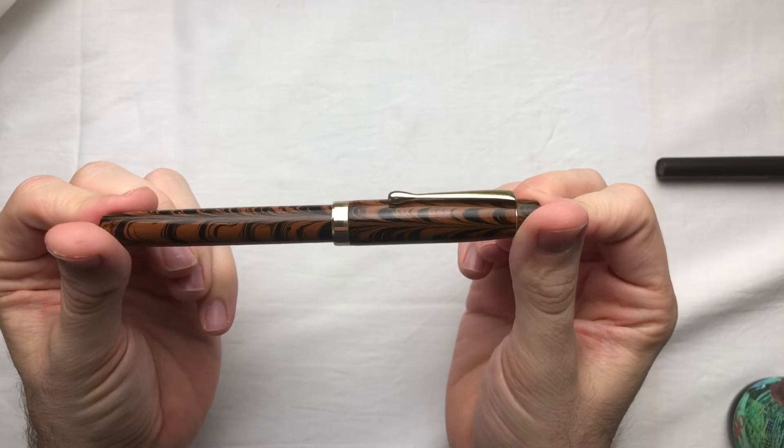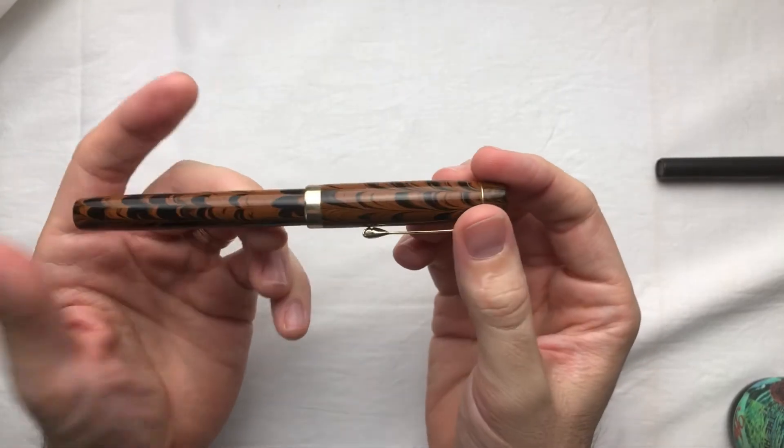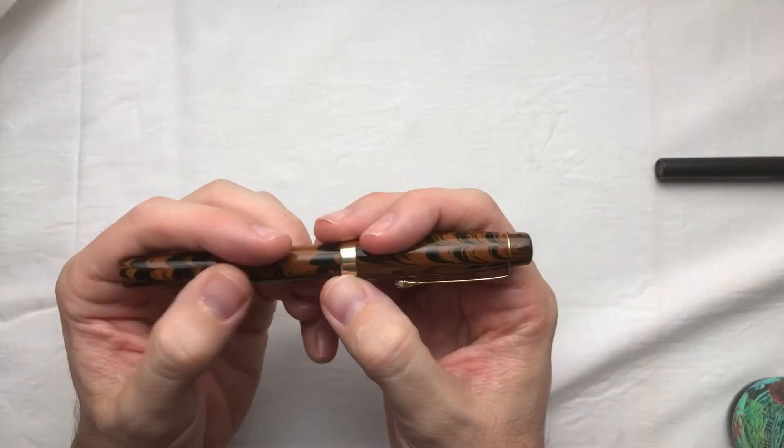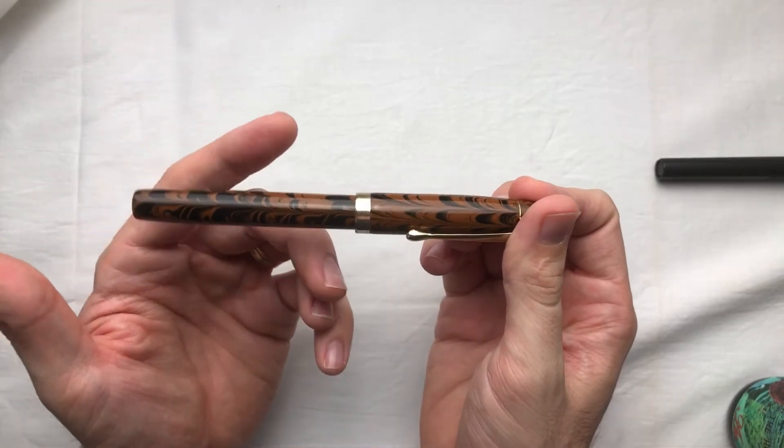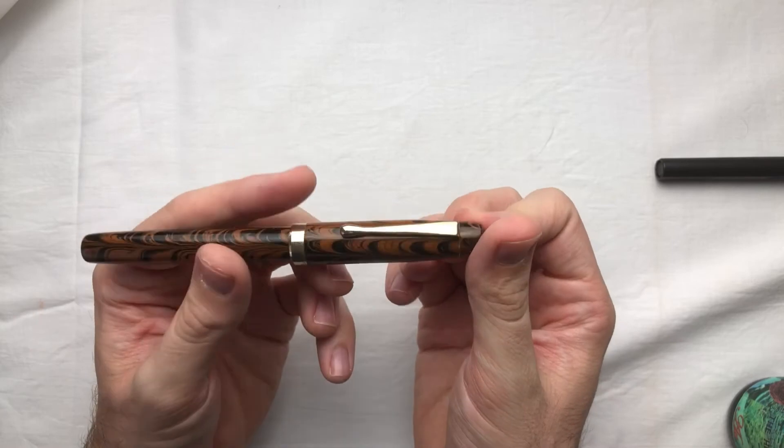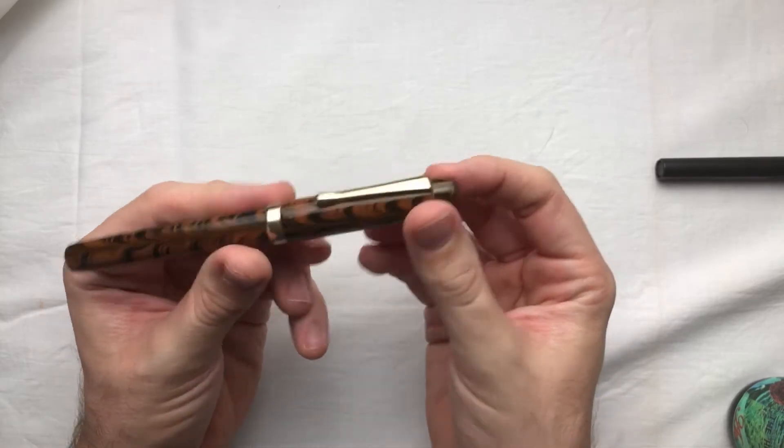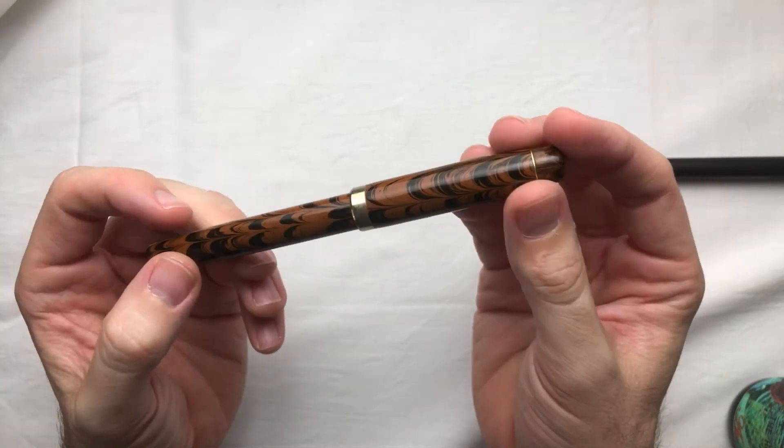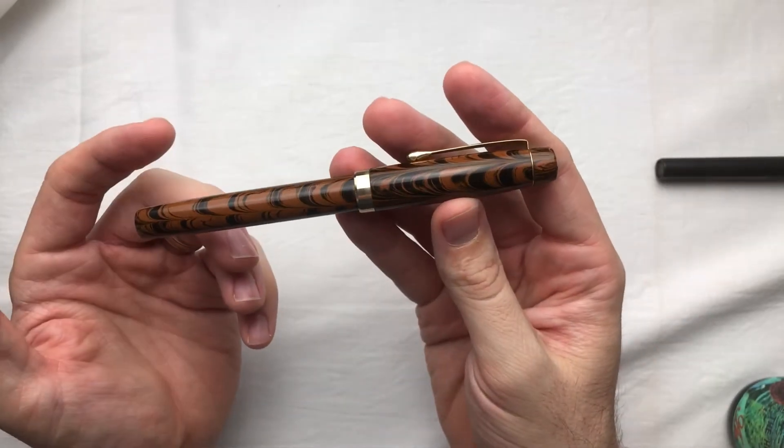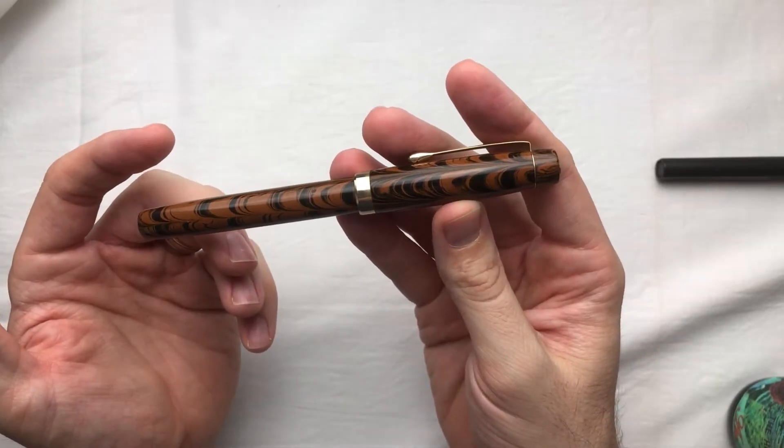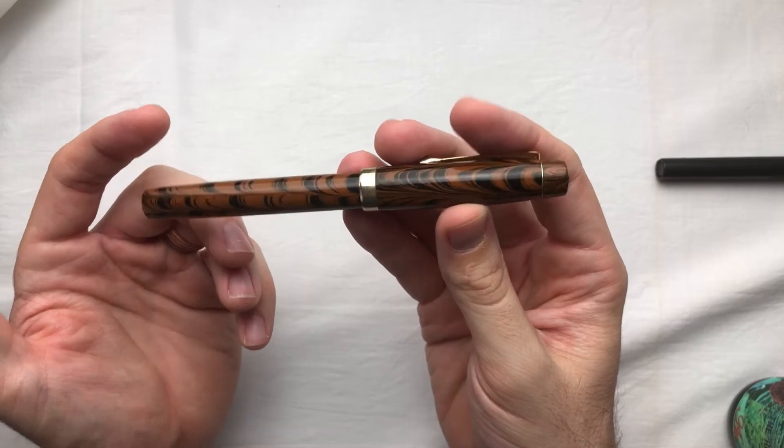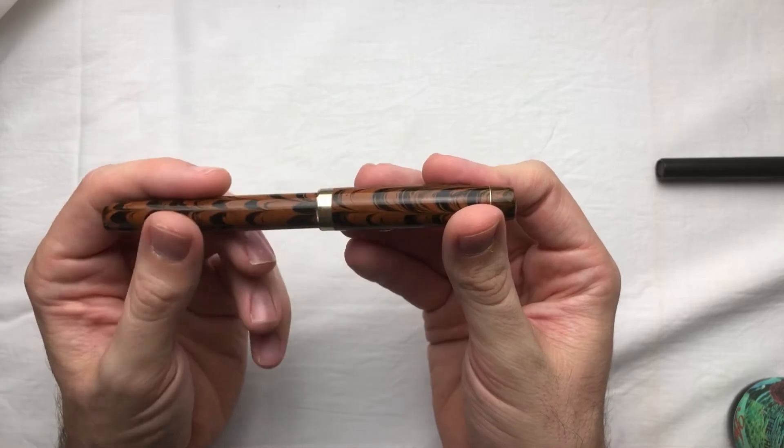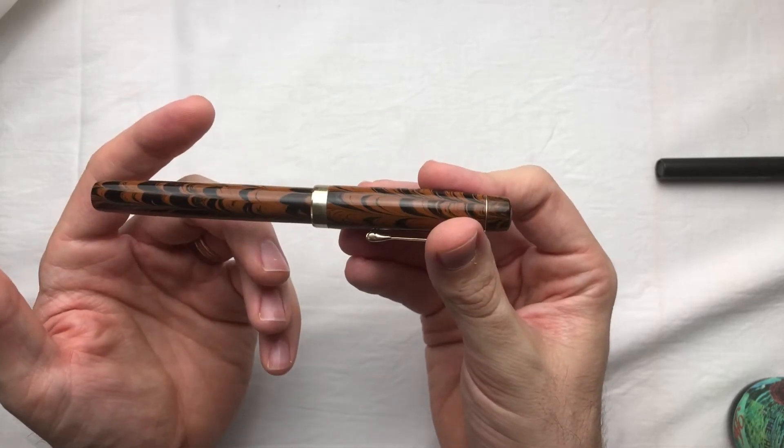This is the Fountain Pen Revolution Himalaya version 2. In look, it's somewhat similar looking to the version 1, which I believe is still for sale. But this is supposedly the new and improved version. This one is made of brown ripple ebonite. Ebonite's got a long history with fountain pens. It was used before plastic was readily available and cheap to use. So it's a bit of a throwback.